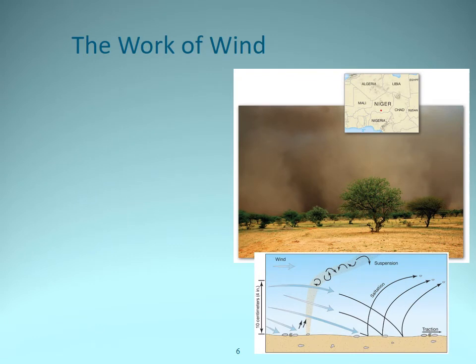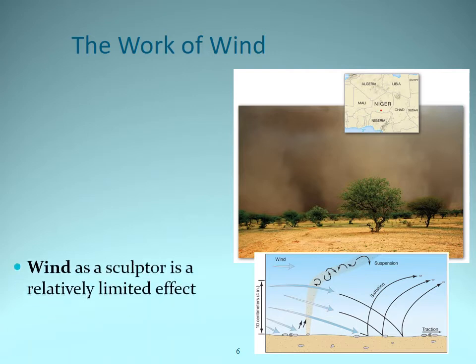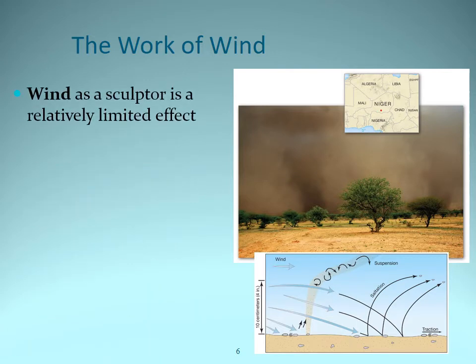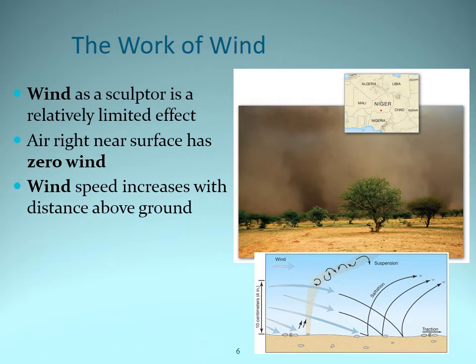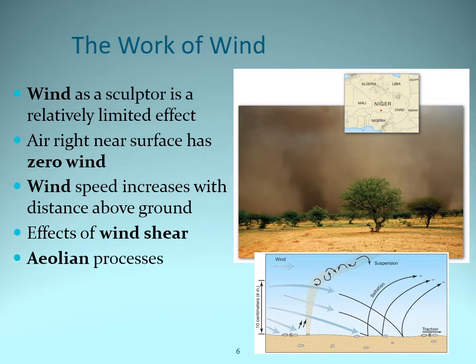The work of wind: compared to the work of water that we dealt with in Chapter 16, the work of wind has a relatively limited effect. It's basically zero right at the ground because of friction, but the higher you go, the stronger the wind will be. That's the effect of wind shear, and wind shear can actually shape and create some very interesting features in a desert landscape. All together, we call the processes shaped by wind aeolian processes.